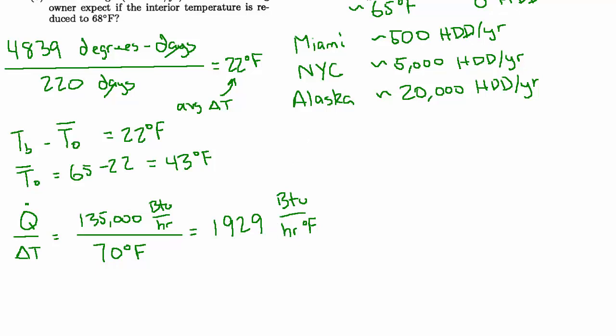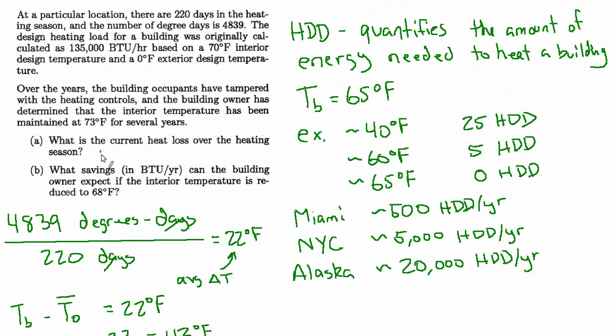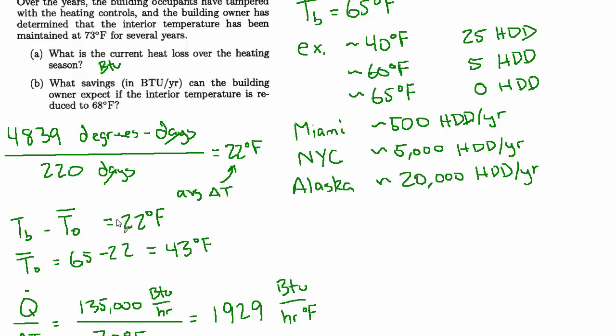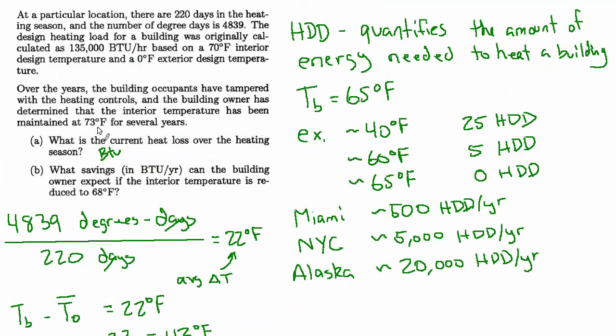So if we want to calculate the total heat loss, as they're asking us to in part A, we want an answer that's just BTUs. We want to know the total amount of energy. So we can use this number, which is energy per unit time and per degree F, and just multiply by the delta T and the amount of time in the heating season. And we should get the total heat loss. So the total heat loss is going to be 1929 BTU per hour per degree Fahrenheit times the actual delta T. And now this is going to be based on the actual operational conditions. So unlike when we're talking about heating degree days, and we use this base temperature, now we want to use the temperature of how they're really controlling the building.